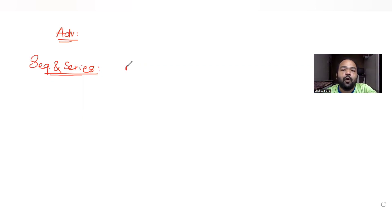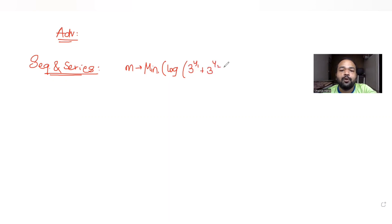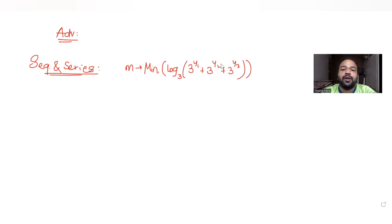The question tells us that small m is the minimum possible value of the expression: log base 3 of (3 raised to y1 + 3 raised to y2 + 3 raised to y3), where y1, y2, y3 are real numbers with y1 + y2 + y3 equal to a given value.